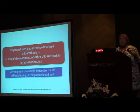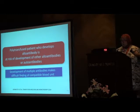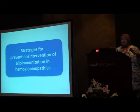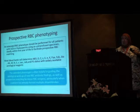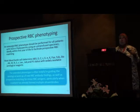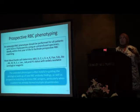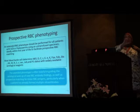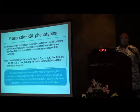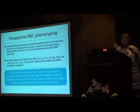Once a patient develops multiple antibodies, it becomes very difficult to find a compatible blood unit. To prevent alloimmunization, the best approach is — before the patient is first transfused — to perform extended red cell phenotyping, giving the patient a complete blood group identity. If not fully possible, at minimum perform RH and Kell phenotyping, what we call limited phenotyping.